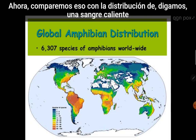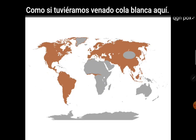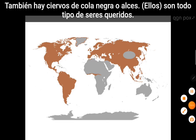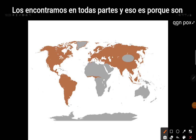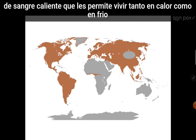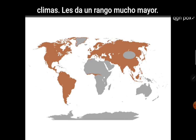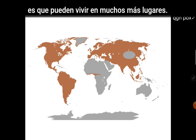By comparison, warm-blooded creatures like deer — white-tailed deer, black-tailed deer, elk — are found just everywhere. That is because they are warm-blooded, which enables them to live in both hot and cold climates, giving them a much greater range. The cost is they have to eat a lot more, but the benefit is they can live in a lot more places.